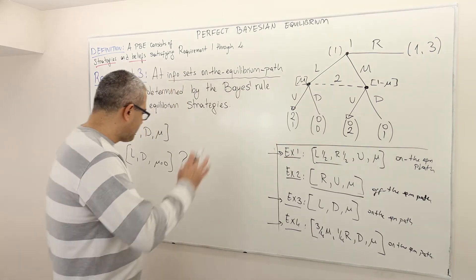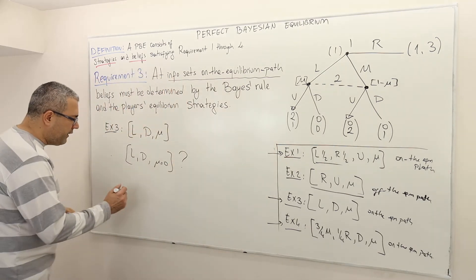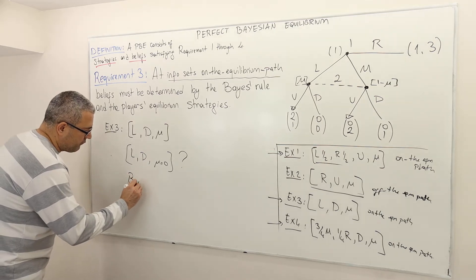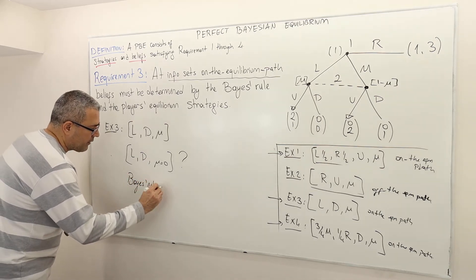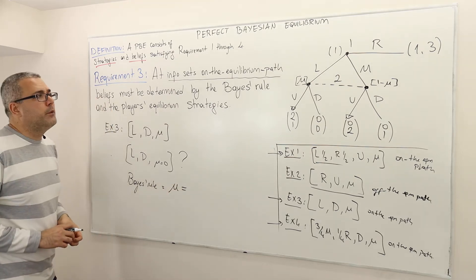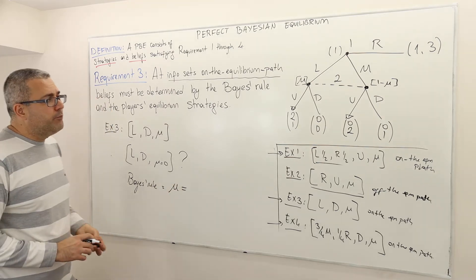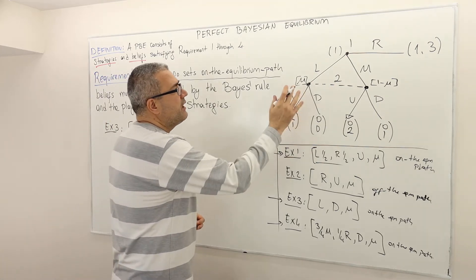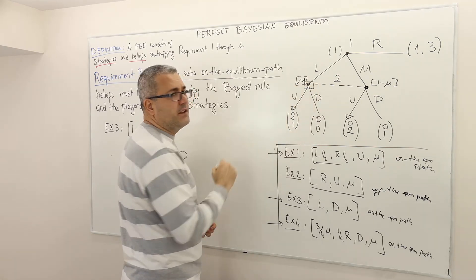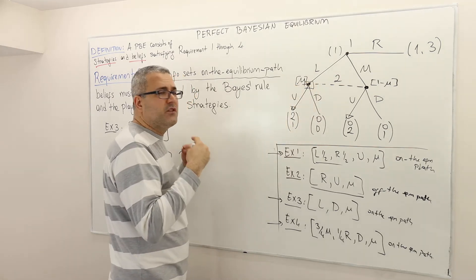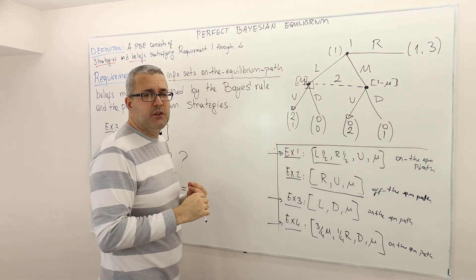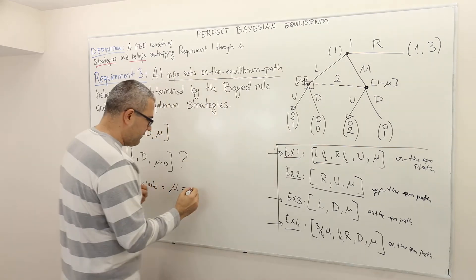Why? Well, according to Bayes' rule, what should the value of mu be? Mu is the likelihood of ending up at this decision node — the probability of ending up at this decision node given that you reach this information set.